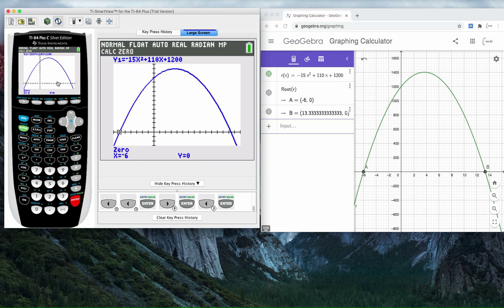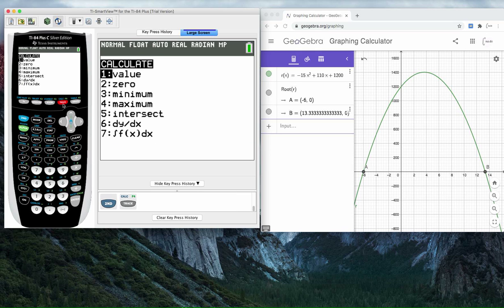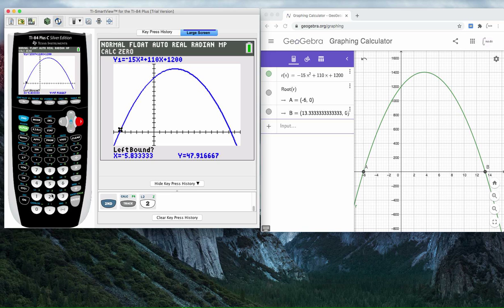Now let's do the same thing for the other x-intercept. Blue button to go to calc, and then number 2 on your keyboard to get to zero. We have to move all the way to the next intercept. I need to move this little crosshatch to the left of this point here. I'm going to keep holding this arrow button down until I get to somewhere to the left. Hit enter. Then keep going to the right. Enter. And then go somewhere in the middle to guess. I get 13.33 and y equals zero. So those x-intercepts are correct.